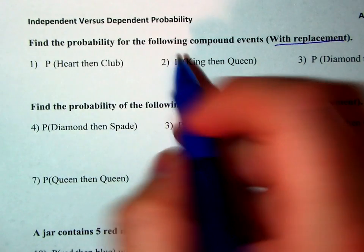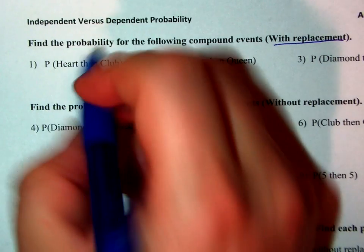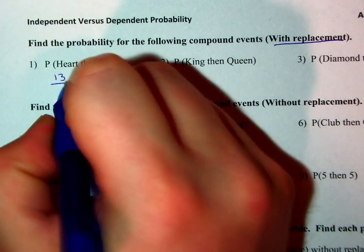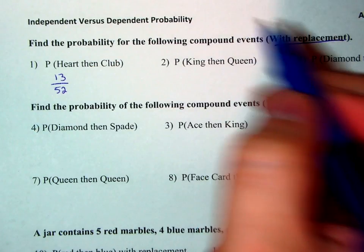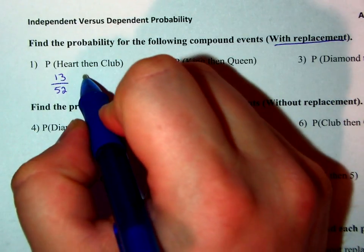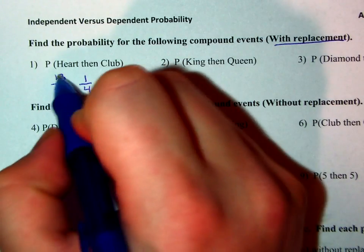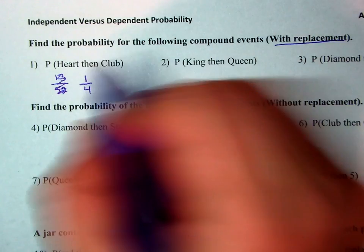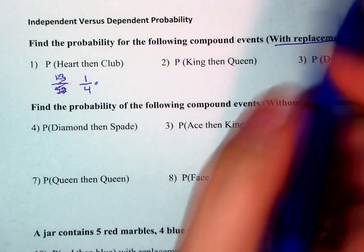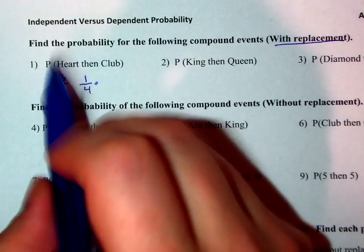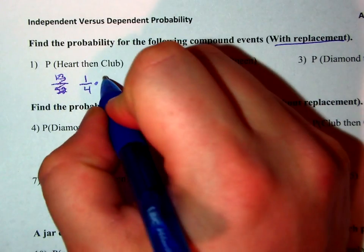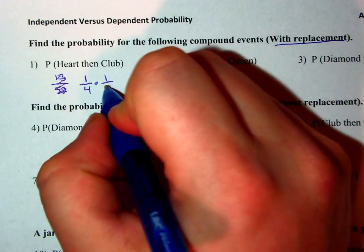The probability of finding a heart would be 13 out of the 52 cards, which I know is equivalent to 1 fourth. Then a club. Then tells me I'm multiplying, and since a club is an entire suit that is 13 out of 52, that would also simplify to 1 fourth.